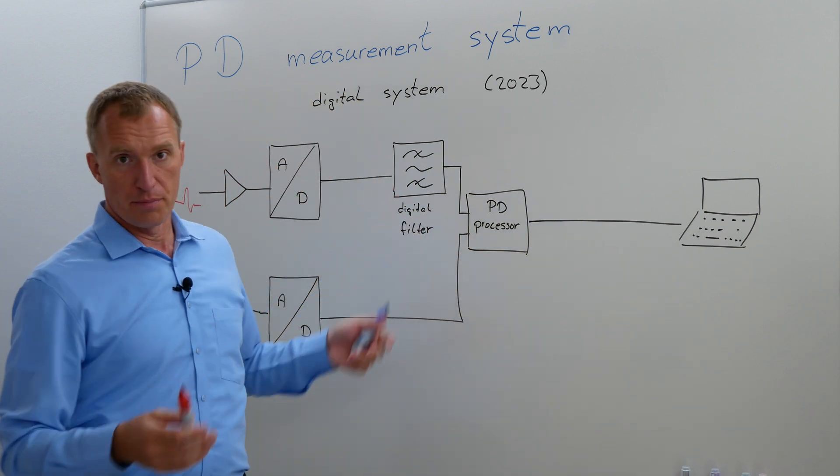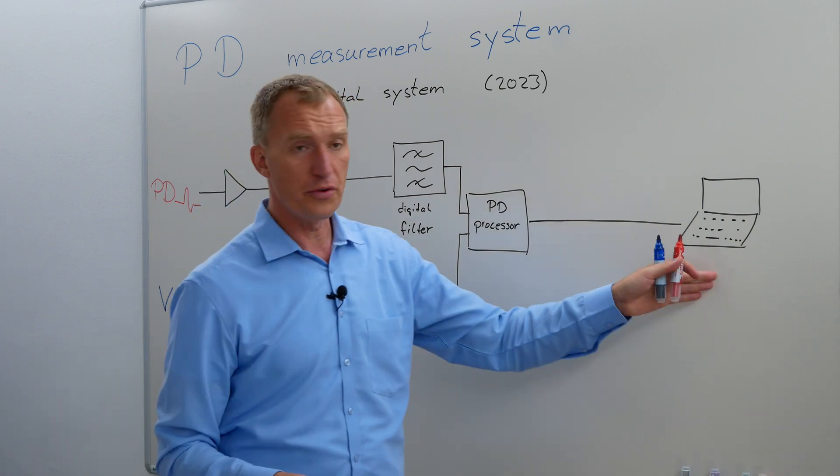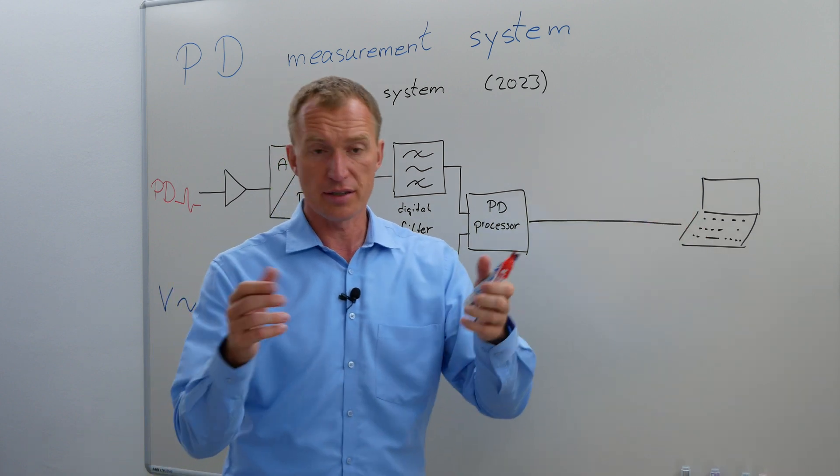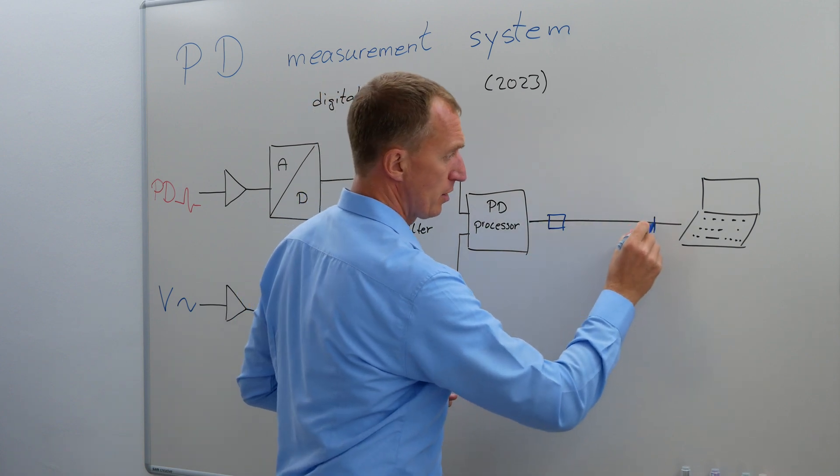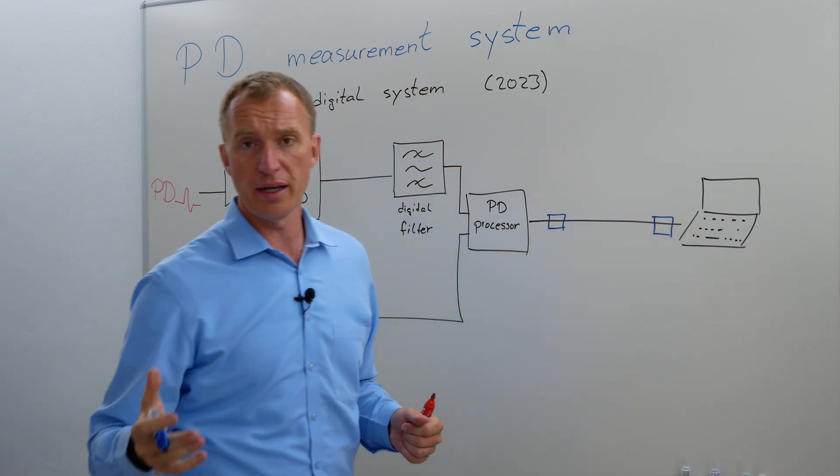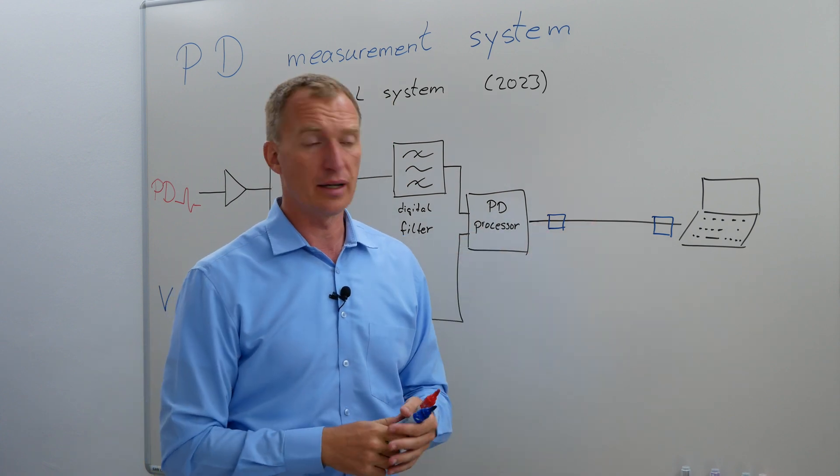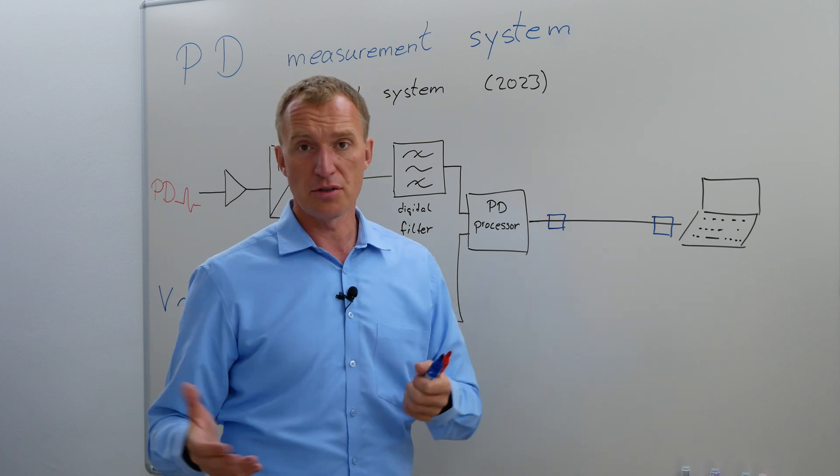Then you have something, let's call it the PD processor, that brings these two things together. And then the whole thing goes to your human interface device, like a computer. There are some companies who have a transmission of the signal in a different way, in a digitized way, sometimes not even a galvanic coupled system for communication. And this has a lot of advantages.